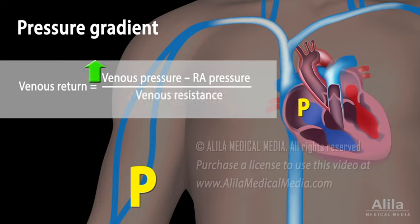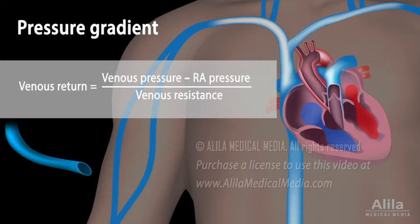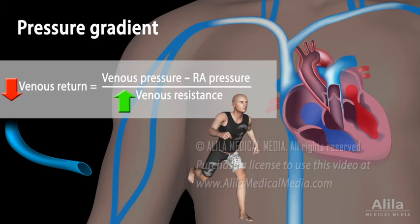Factors that increase venous pressure or decrease right atrial pressure facilitate venous return. In principle, constriction of veins blocks blood flow, increases venous resistance, and reduces venous return. However, when blood vessels throughout the body are constricted, such as during sympathetic activation, the increased resistance causes blood pressure to rise, and this eventually overrides the increase in venous resistance. As a result, venous return increases.